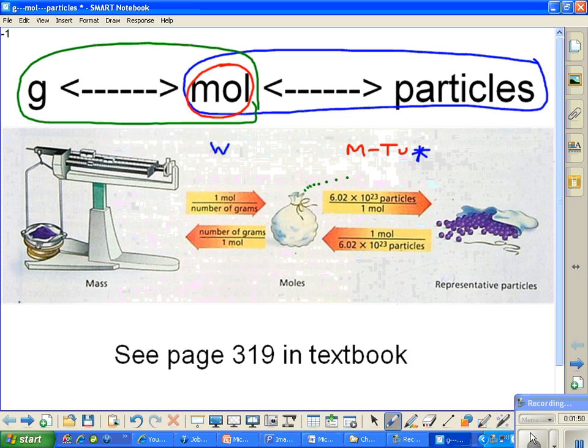Again, moles to particles. Moles to particles is done by this arrow, the top arrow. Because we're starting with moles. And let's say we have five moles to begin with.